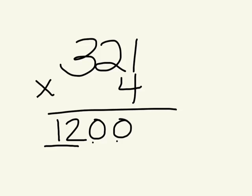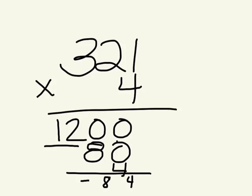300 times 4 is 1,200 because 3 times 4 is 12 plus 2 zeros. Then 2 is really 20 times 4, which is 80. And 1 times 4 is 4. When we add up all of those, run out of space, we would get 1,284.